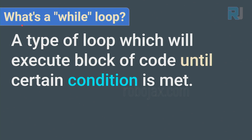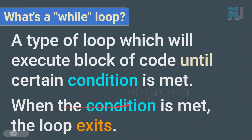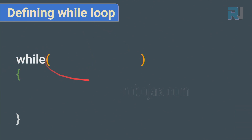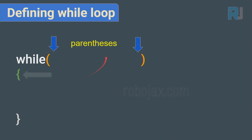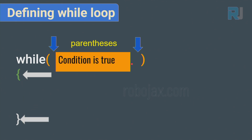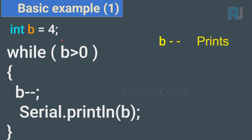Now let's see what a while loop is. It's a type of loop that executes a block of code until a certain condition is met, and when the condition is no longer met, the loop exits. The syntax is: while(condition) { code block }. As long as the condition is true, the code inside will execute.